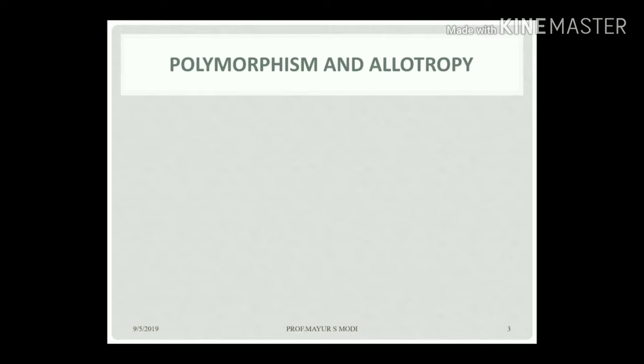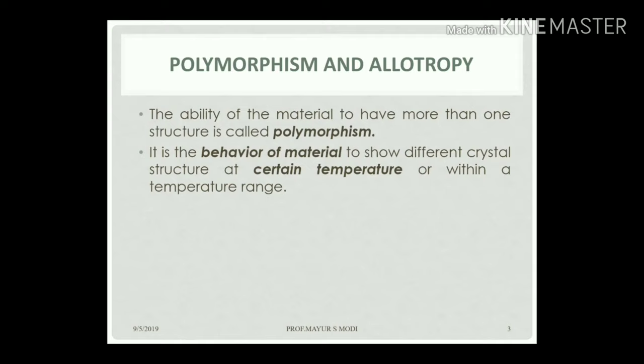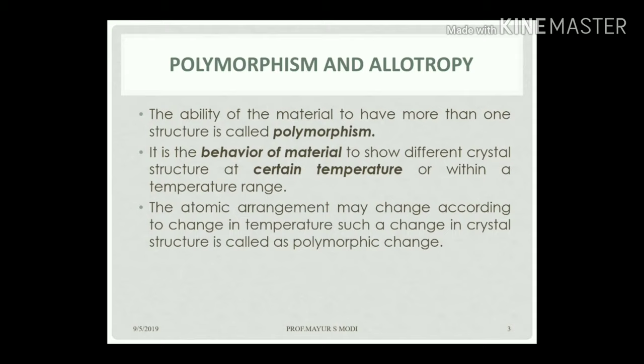Some more terminology: polymorphism and allotropy of metals. The ability of a material to have more than one structure is called polymorphism — the behavior of a metal to show different crystal structures at certain temperatures or within a temperature range. At different temperatures the material has a different structure, and since structure is directly related to properties, different temperatures yield different properties. A change in crystal structure according to temperature change is called a polymorphic change.